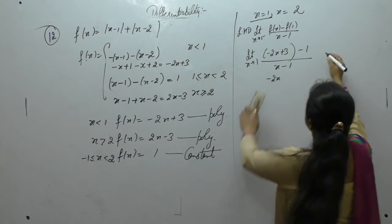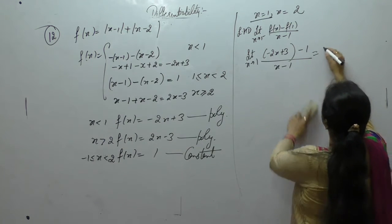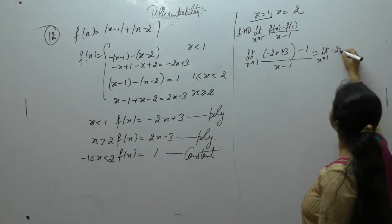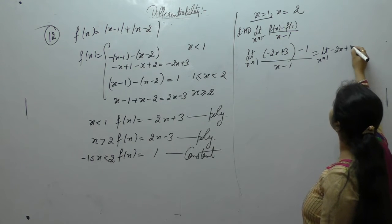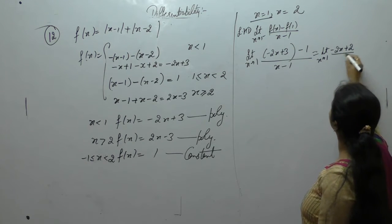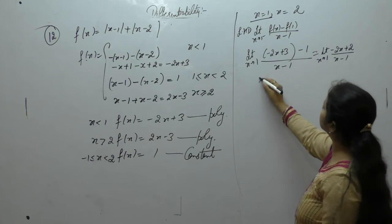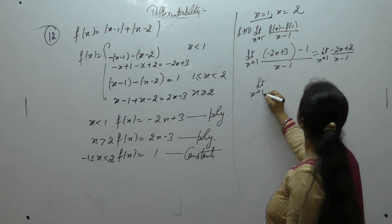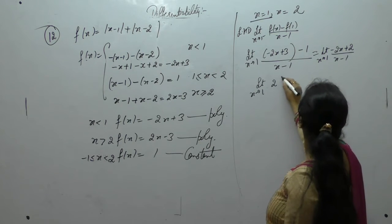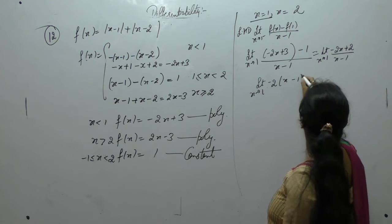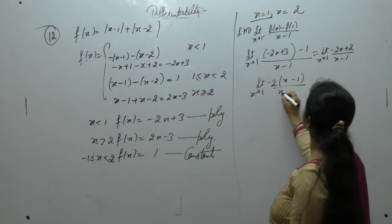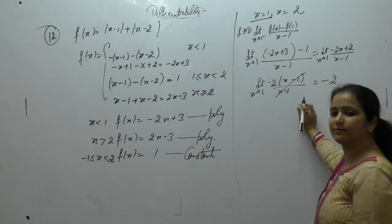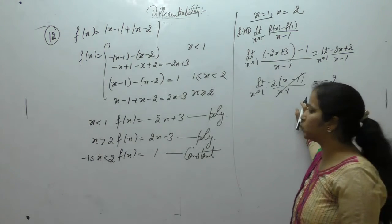So: limit x tends to 1 of [−2x + (3 − 1)] / (x − 1). That gives limit x tends to 1 of [−2x + 2] / (x − 1). Taking −2 common: −2(x − 1) / (x − 1), so we get the left hand derivative as −2.